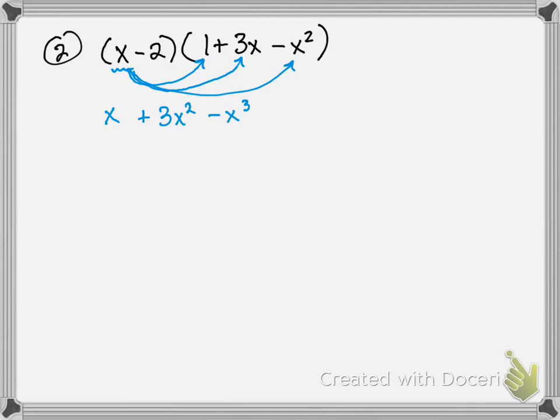So now I've got to take that negative 2. I've got to take this negative 2 and I've got to take it to all three things in the other piece. So let's look. Negative 2 times 1. Negative 2. I've got negative 2 times positive 3x. Negative 6x. I've got negative 2 times negative x squared. Positive 2x squared.